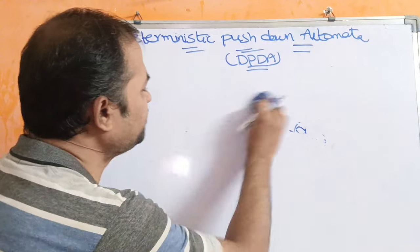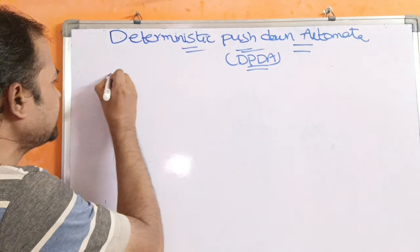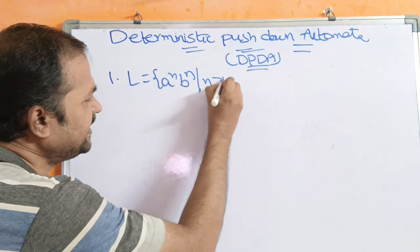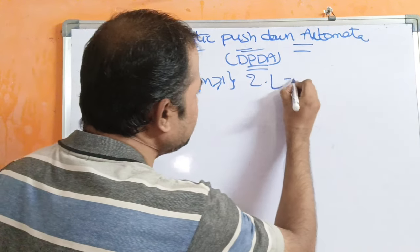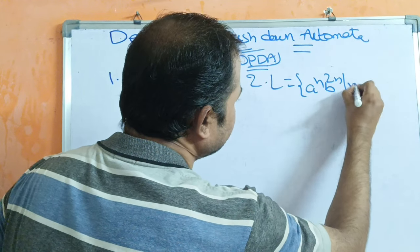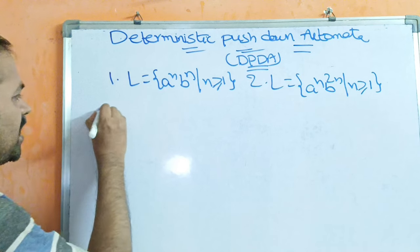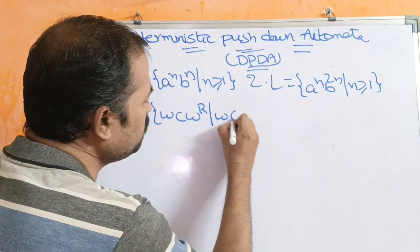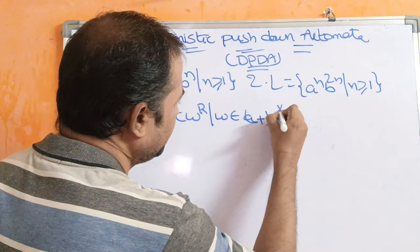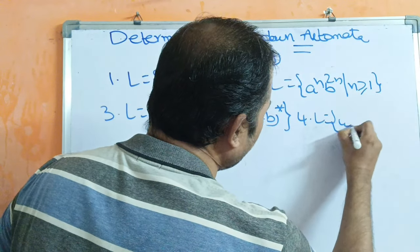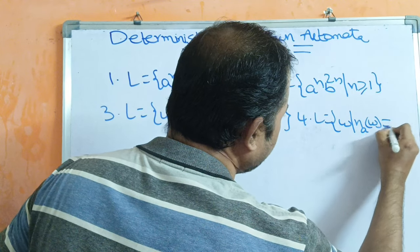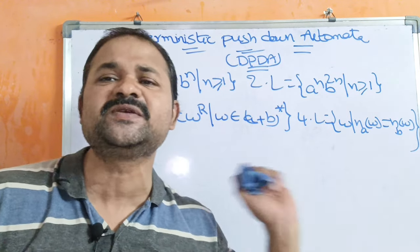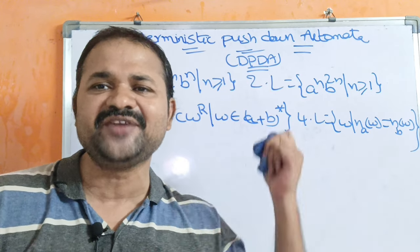Now let us see examples for DPDA. The first example is L = A^N B^N such that N ≥ 1. Second example: L = A^N B^2N such that N ≥ 1. Third example: L = WCW^R such that W belongs to (A+B)*. Fourth example: L = {W such that N_A(W) = N_B(W)} where W belongs to (A+B)*. These four are the famous examples for DPDA.